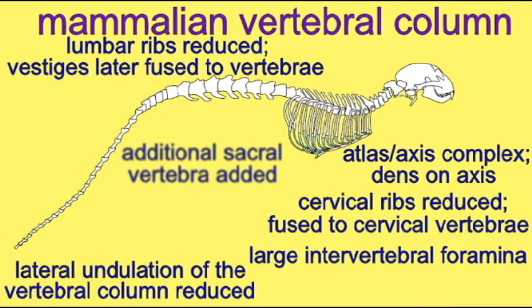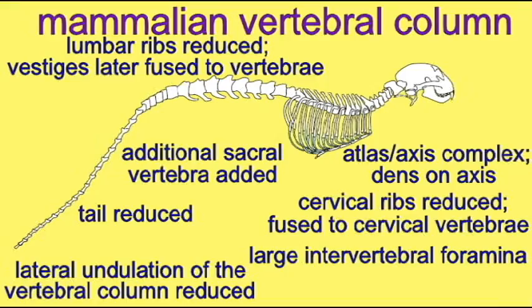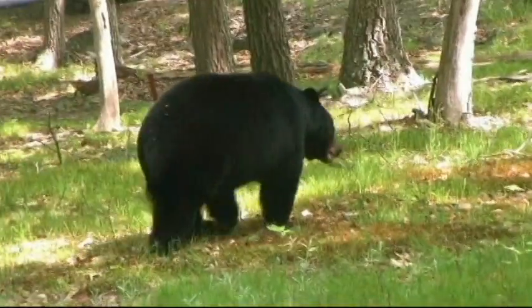Mammals limited the degree to which the vertebral column can perform lateral undulation, or move side to side. This changed how mammals move compared to that of reptiles.